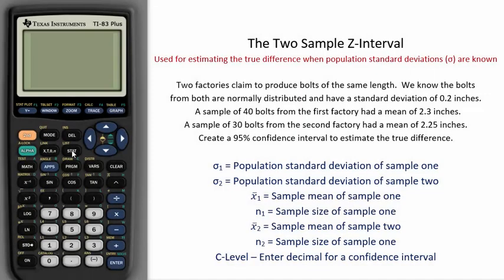The two-sample z-interval is used for estimating the true difference between two means when population standard deviations, sigma, are known.